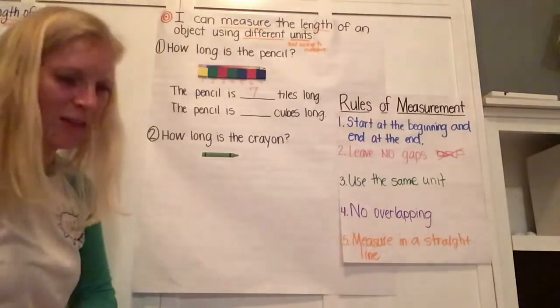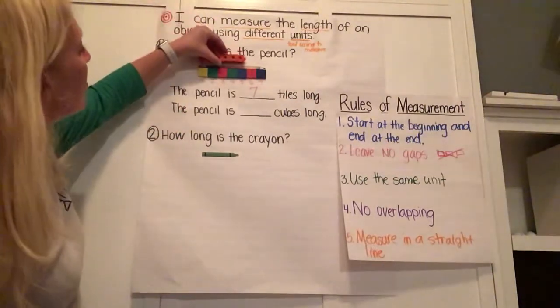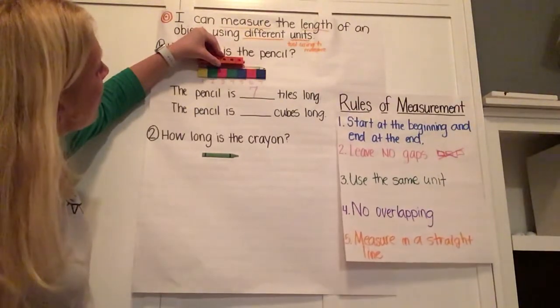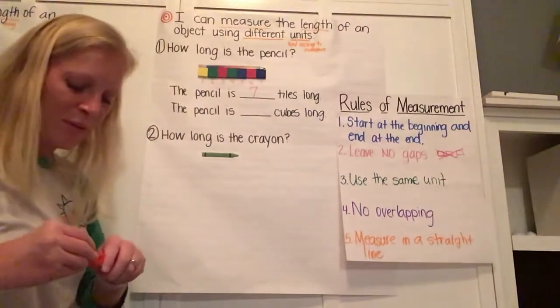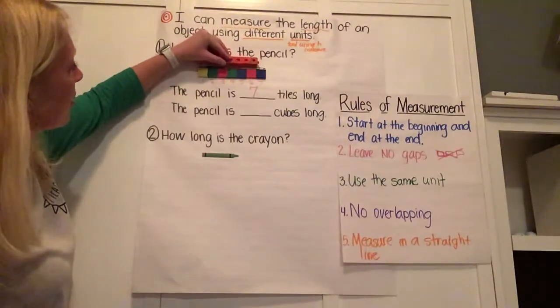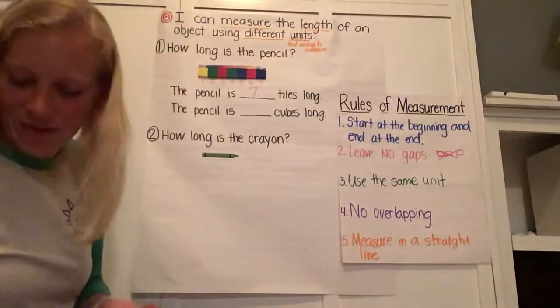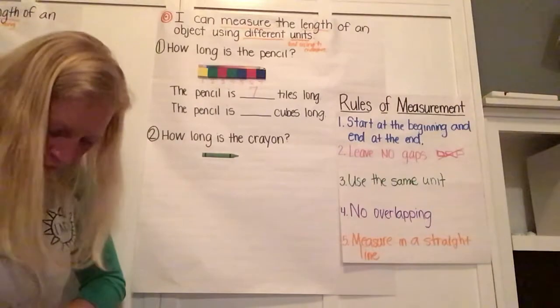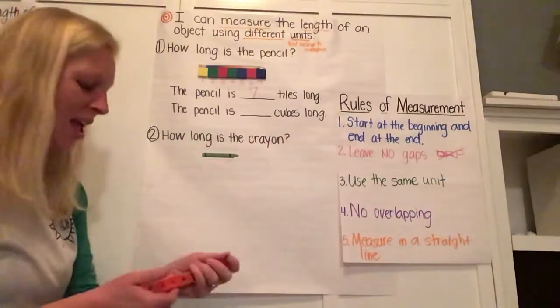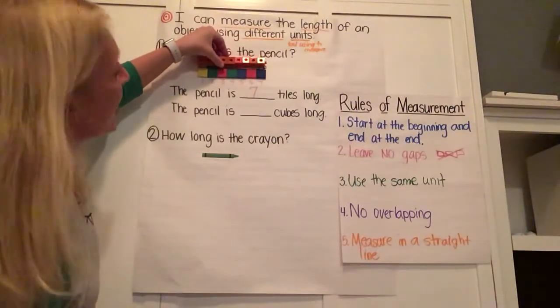With the cubes, we've got to stick them together. So put my cubes up here. Do I have enough cubes yet? How do you know? There's still some pencil left. I'm going to add a couple more on here. Now, what do you think? Is it done? Why not? I've got a little tip of that pencil I haven't covered up yet. What rule am I not following yet? Start at the beginning and end at the end. I've got to pop it on there. Now what? Am I got it? Yes. I'm starting at my end. I'm ending at my end.